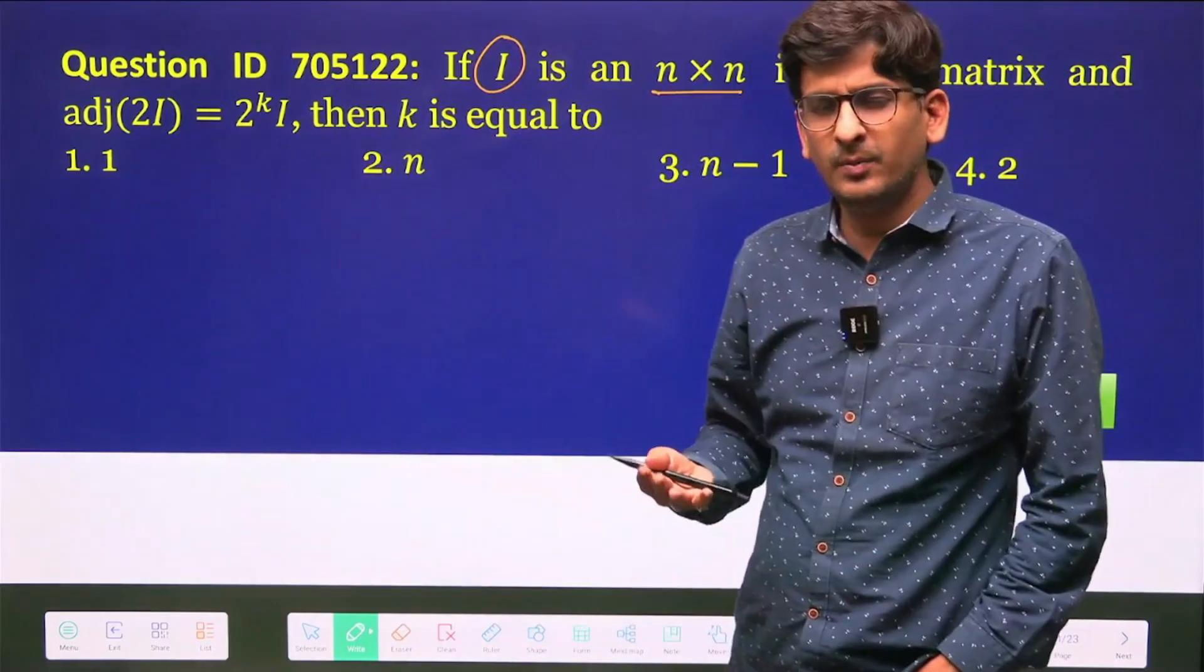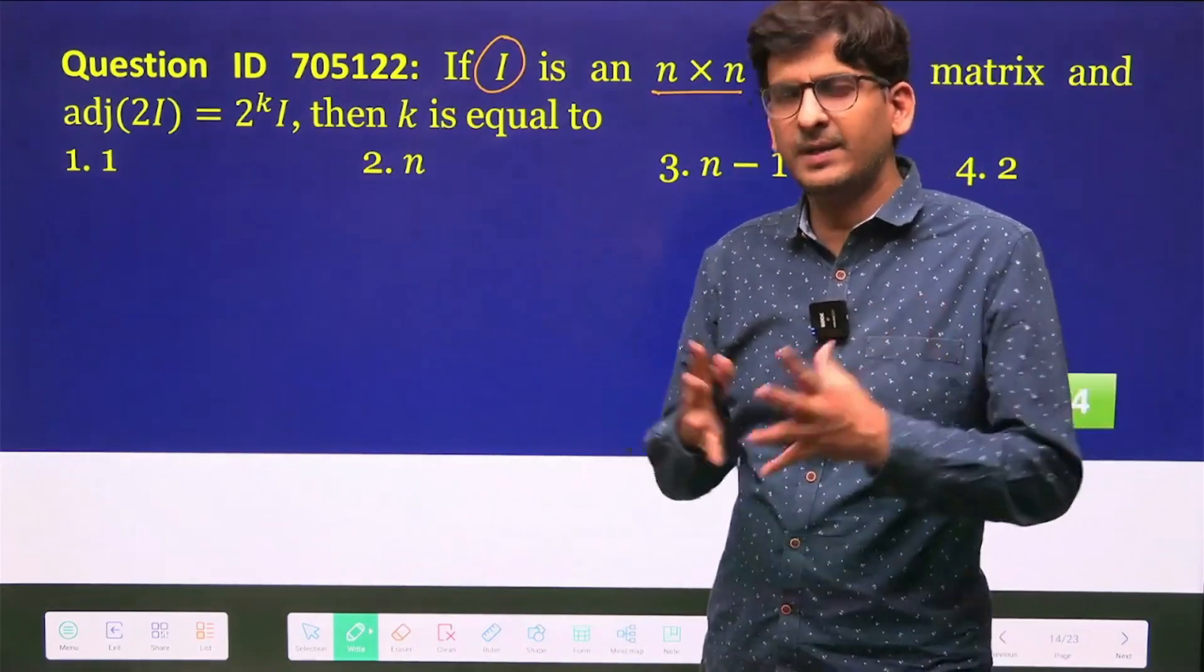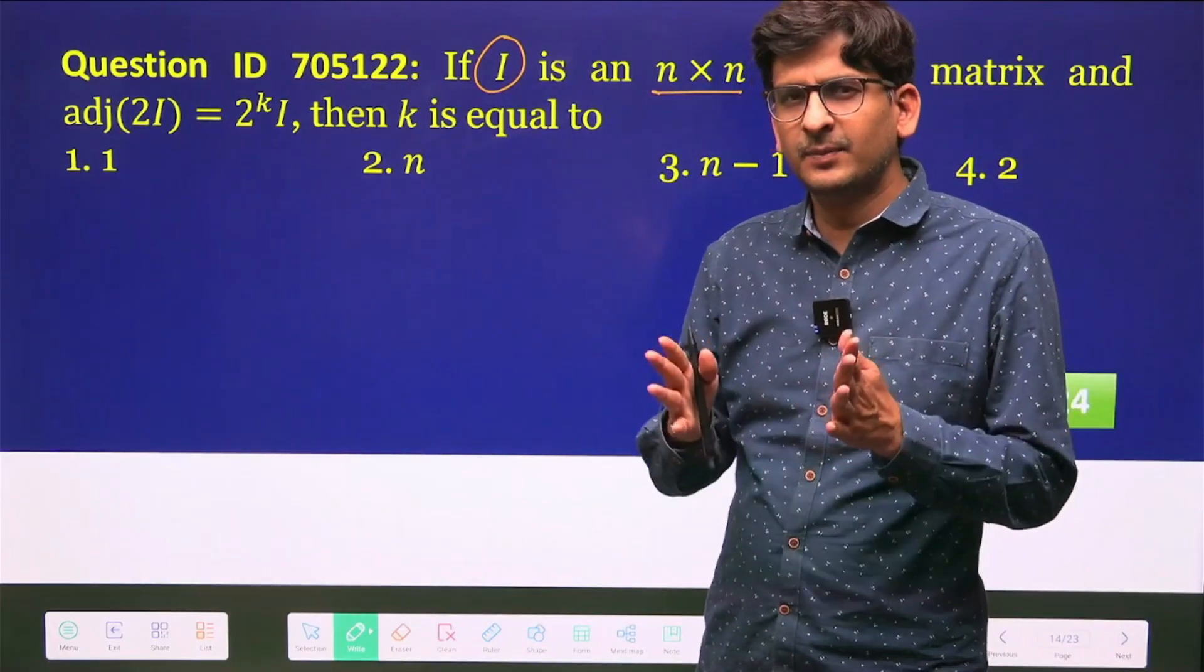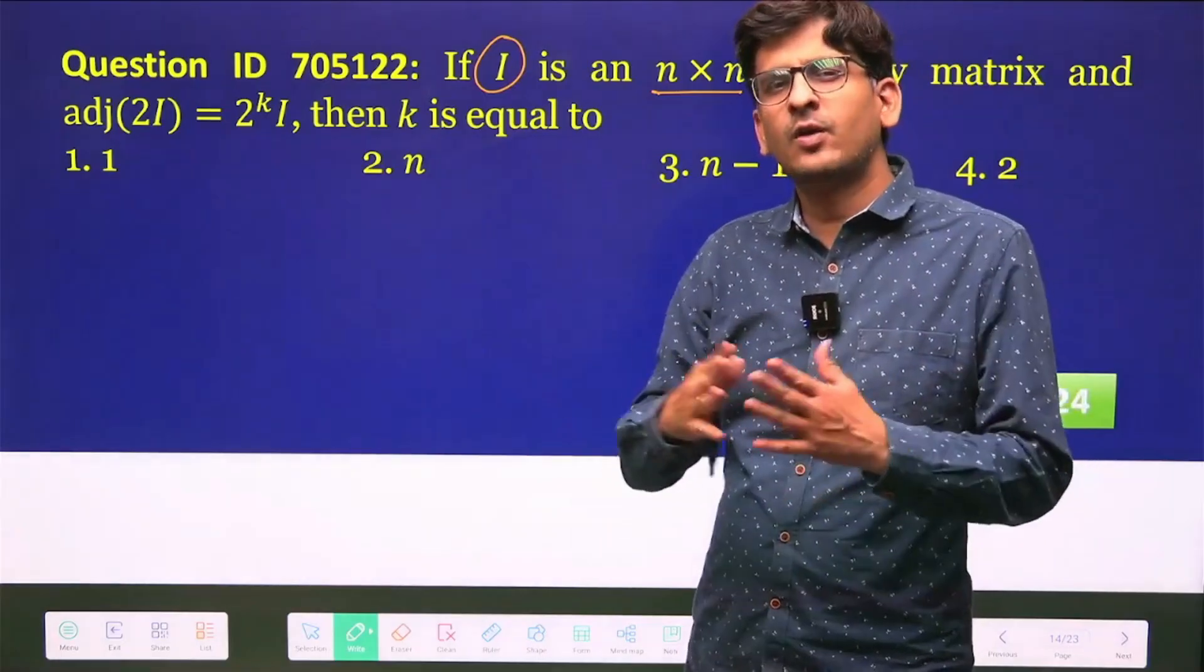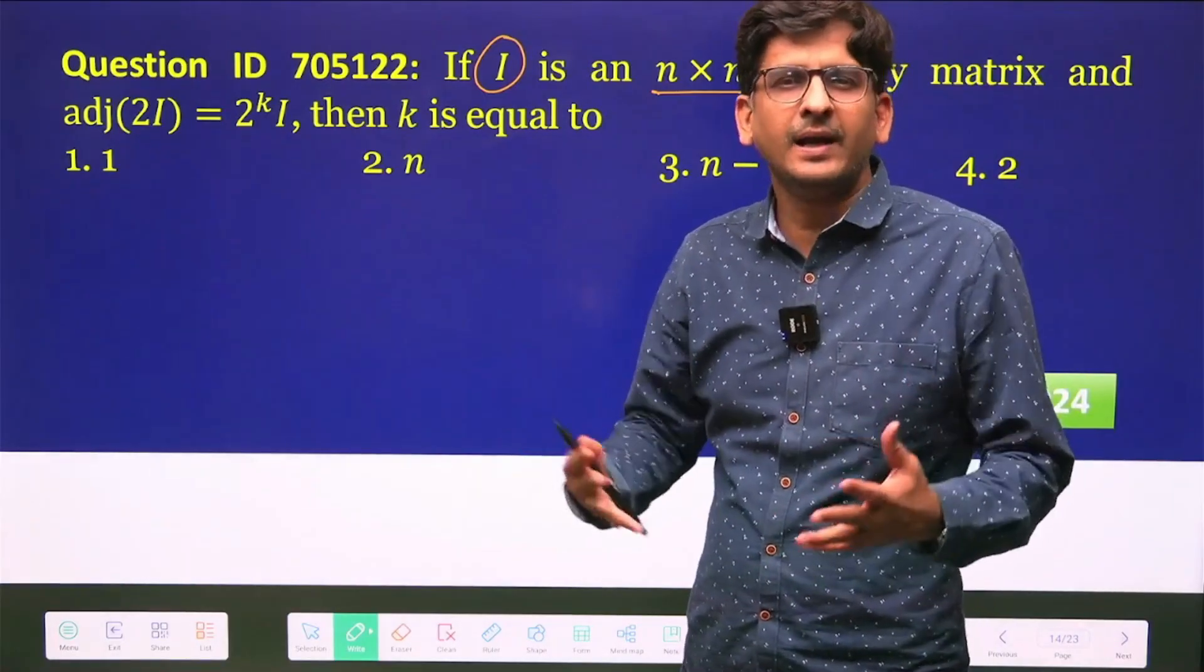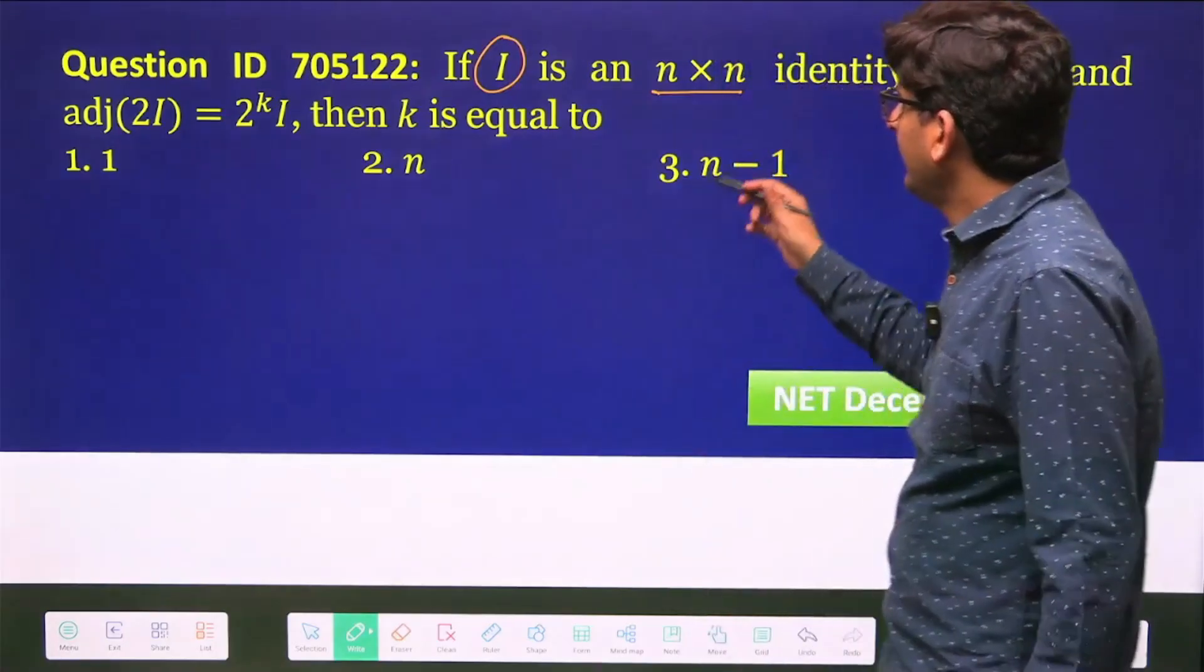I have told you many times and we have done many problems in class where if something in general has been asked, you can rule out the options by taking a particular case. So I can take this n×n as a 2×2 identity matrix.